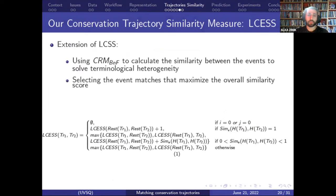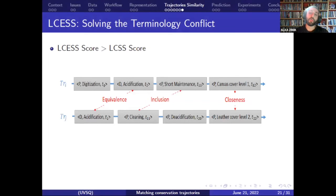Once the similarity between events is defined, we can define the similarity between conservation trajectories. We extended the LCSS measure — longest common subsequence — to take into consideration the relationships between events and maximize the similarity score. The first extension accounts for terminology heterogeneity using the ontology as input. The second extension ensures LCSS measures the maximal possible similarity score between two trajectories. In this example, using standard LCSS we would only match the second event from TRI — acidification — with the first event from TRJ, but using the extended LCSS we increase the score by finding three matches: equivalence, inclusion, and closeness.